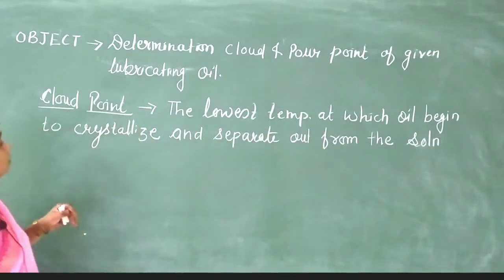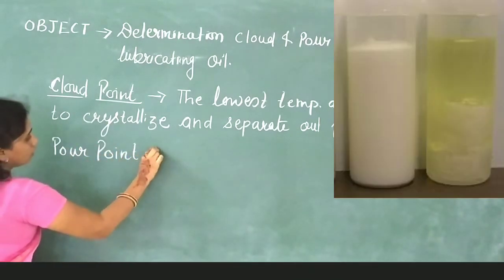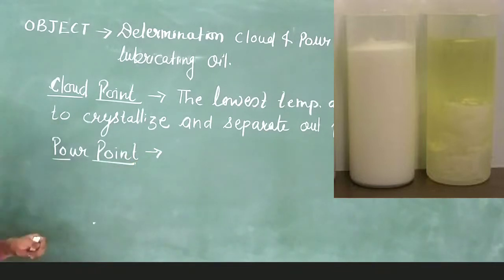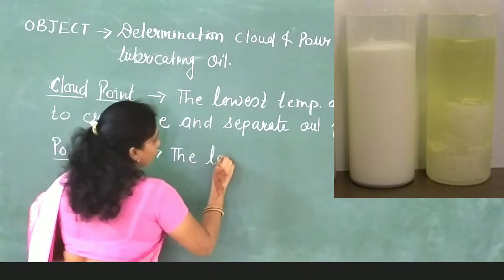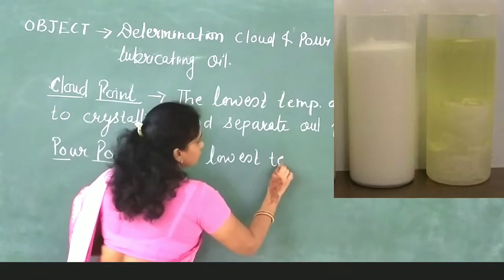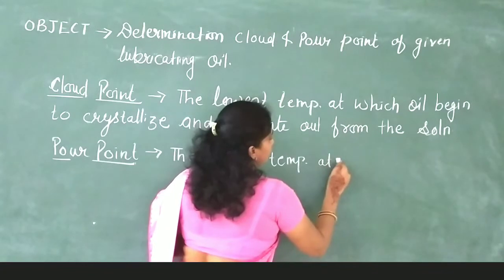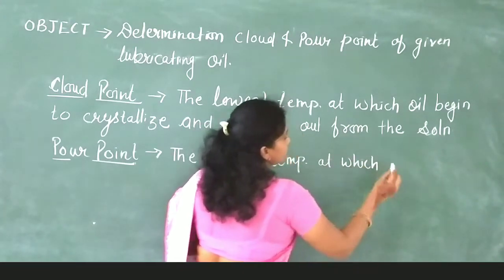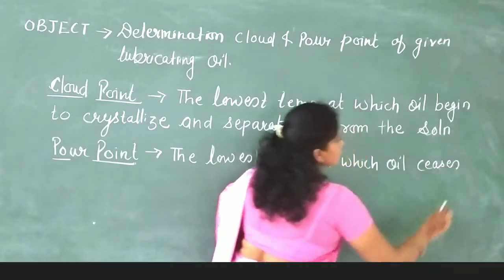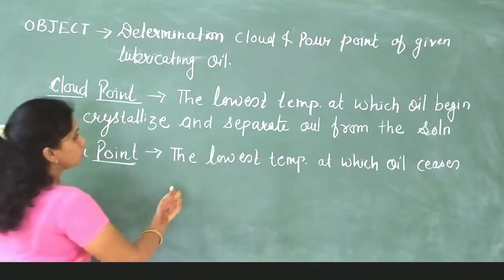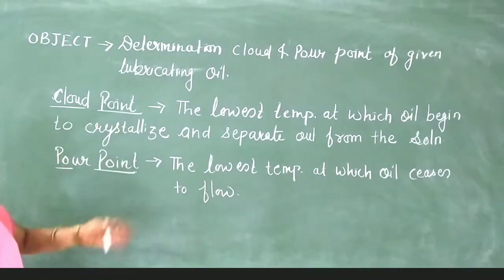The second definition a teacher can ask about is the pour point. The pour point is the lowest temperature at which oil ceases to flow, or stops its flow ability.